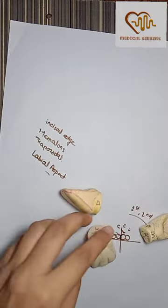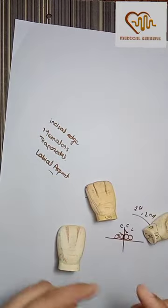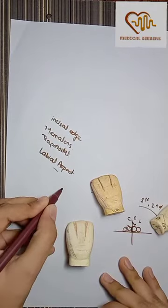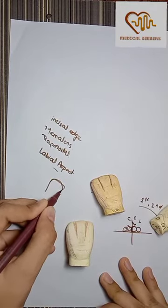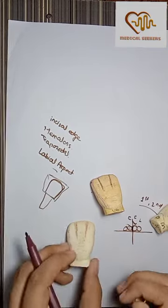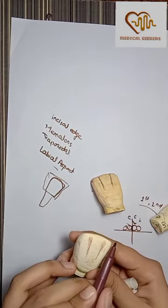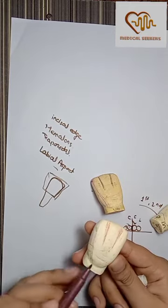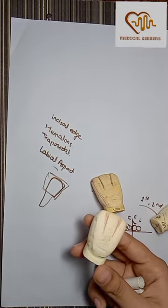General crown shape is trapezoidal. This is a trapezoidal shape. This is a trapezoidal shape. The long axis will be incisal and short axis will be cervical.